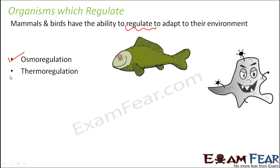Regulation can happen in two ways: one is called osmoregulation, the other is called thermoregulation. The word 'osmo' is derived from osmosis, and osmosis is all about water — so osmoregulation is the regulation of water within our body. 'Thermo' is derived from the word heat, and heat is associated with temperature.